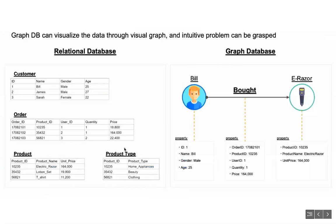Comparing graph structure to relational databases: in relational databases, all data are stored in table format — for example, customer, order, and product tables. In the graph structure, we have vertices and edges: one customer vertex 'Bill' who bought something, with all the attributes of each specific vertex or edge.